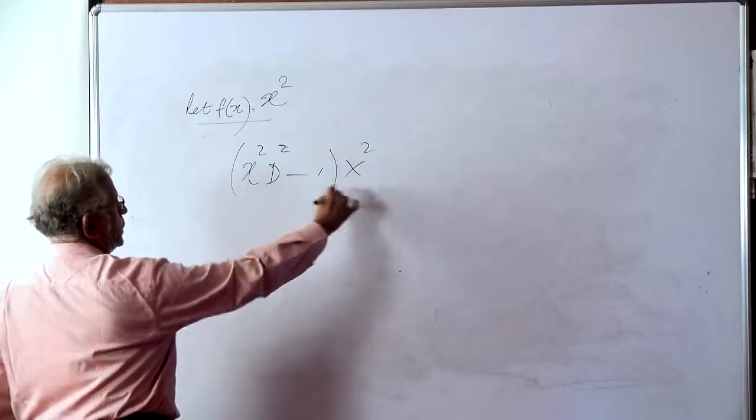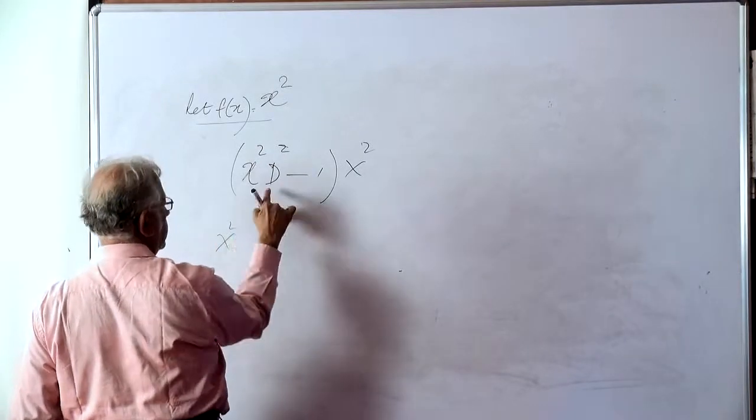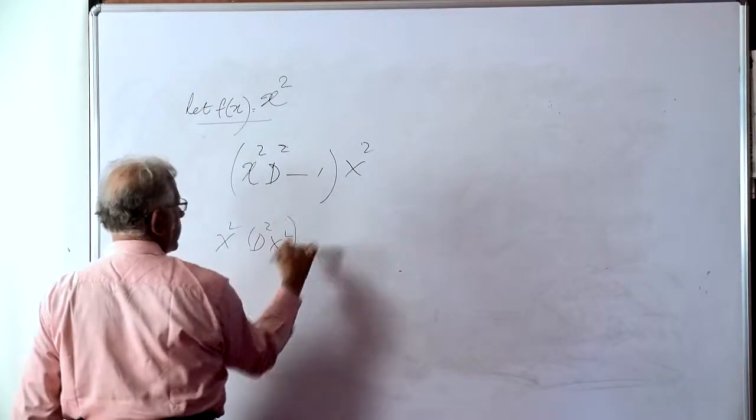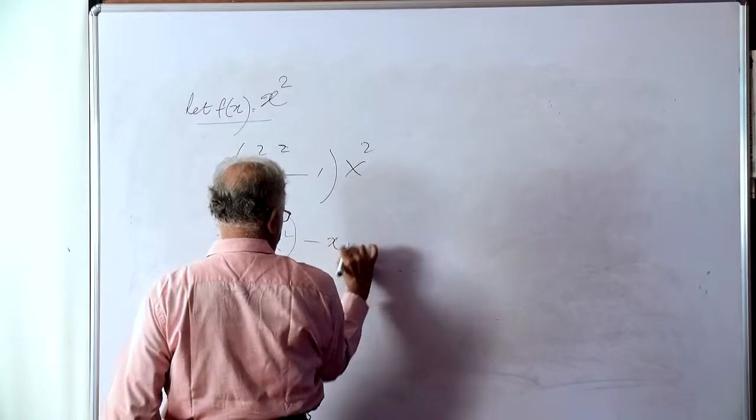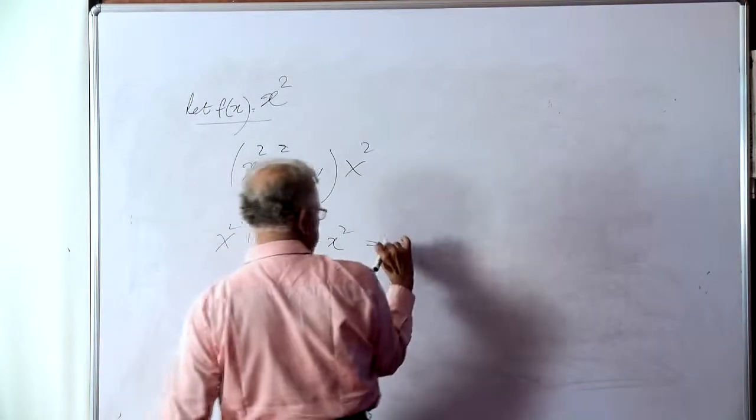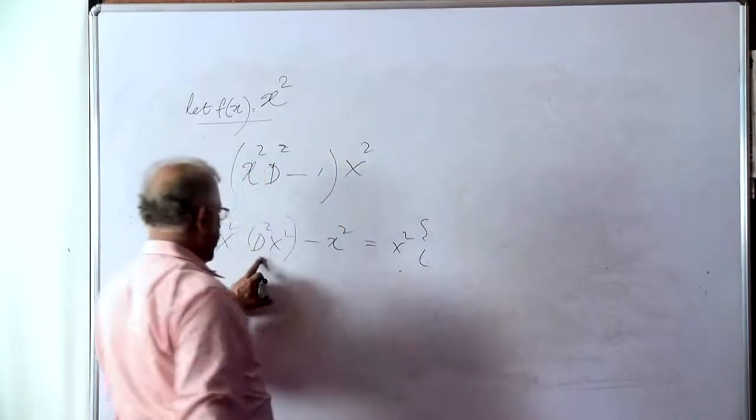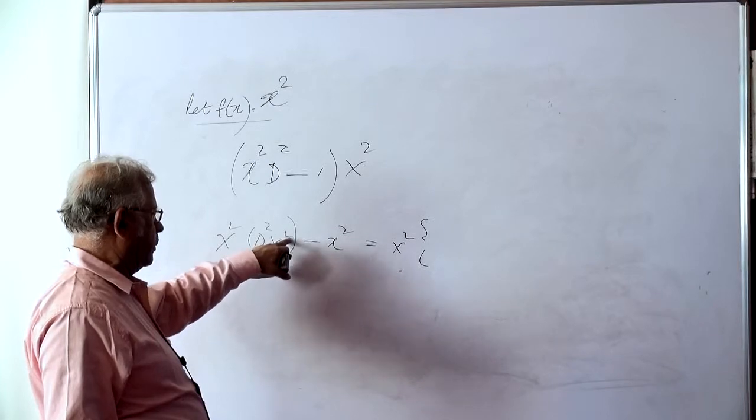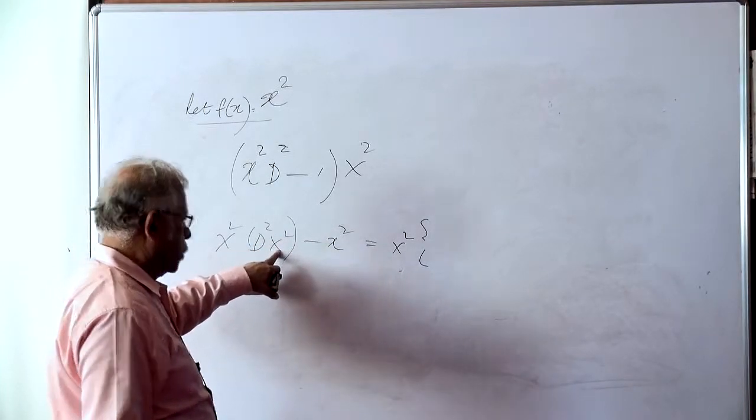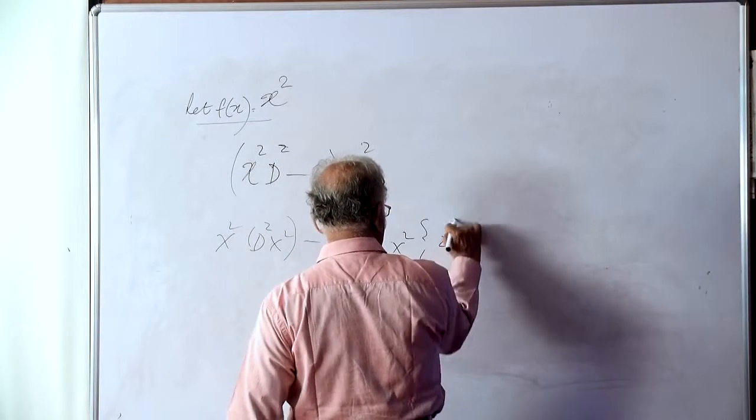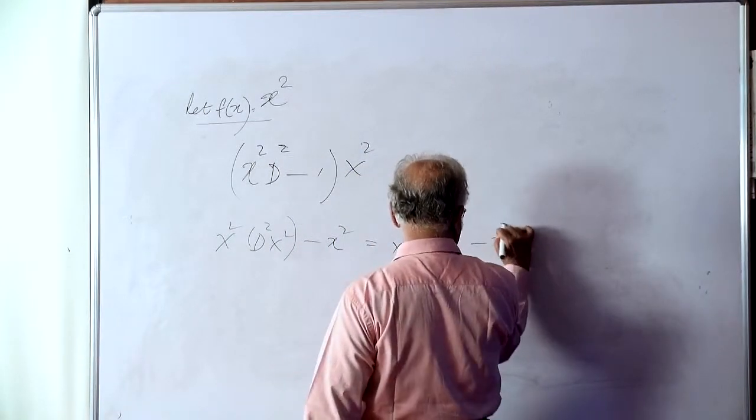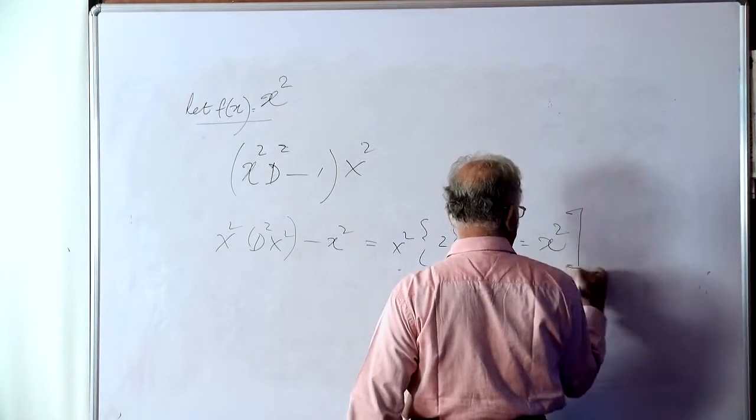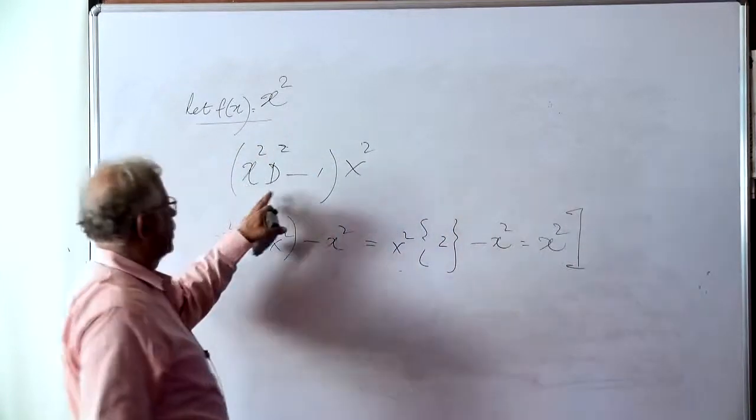Now, this means x squared d² applied on x squared minus x squared. And that is x squared d² on x squared is two derivations carried out on x squared. So the first derivation will be 2x and the second will be just 2. So that into 2 minus x squared is equal to simply x squared. This is the first one operating just by its meaning.